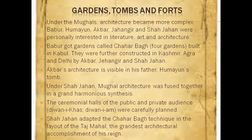Under the Mughal era, architecture became more complex. Babur got Charbagh — four gardens — built in Kabul, which were further constructed in Kashmir, Agra, and Delhi by Akbar, Jahangir, and Shah Jahan. Akbar's architecture is visible in his father Humayun's tomb. Under Shah Jahan, Mughal architecture was fused together in a grand, harmonious synthesis.